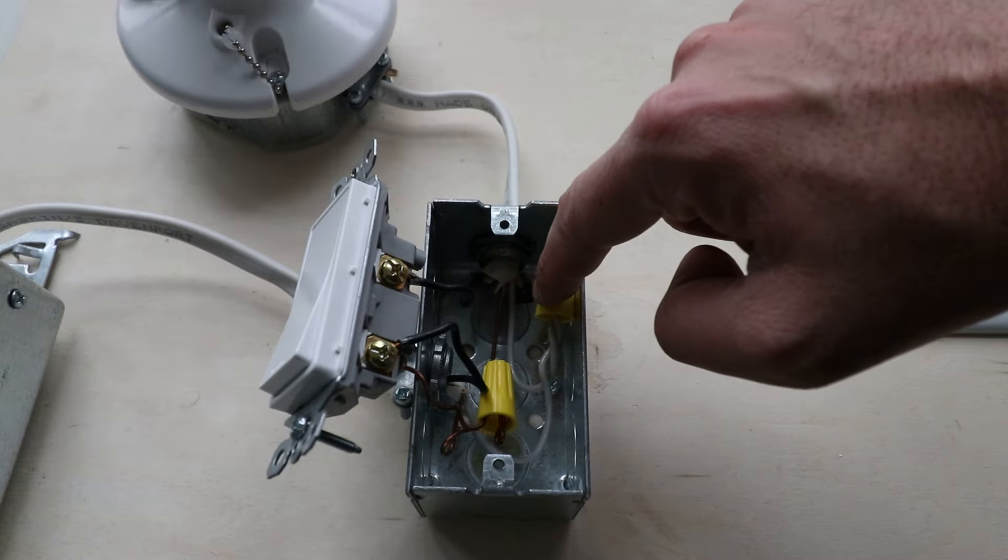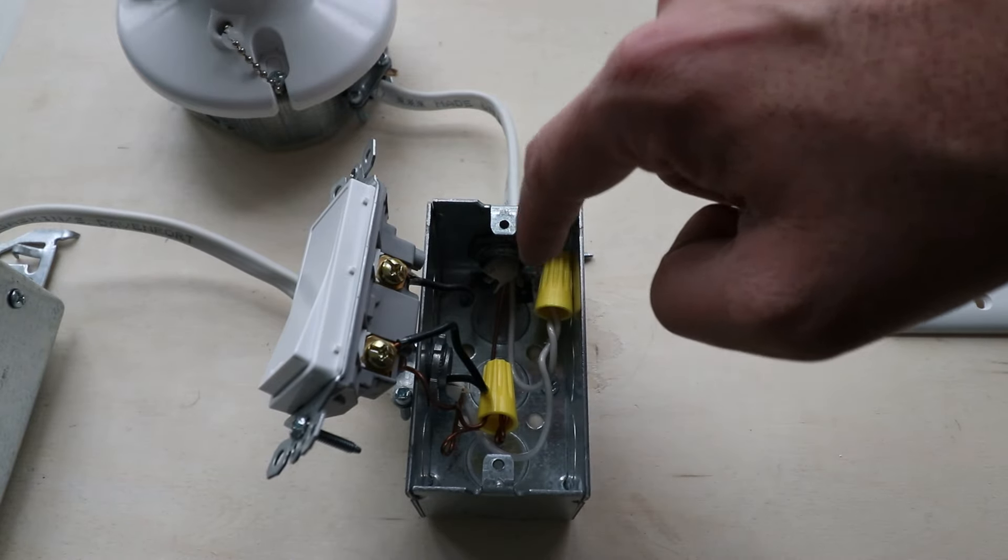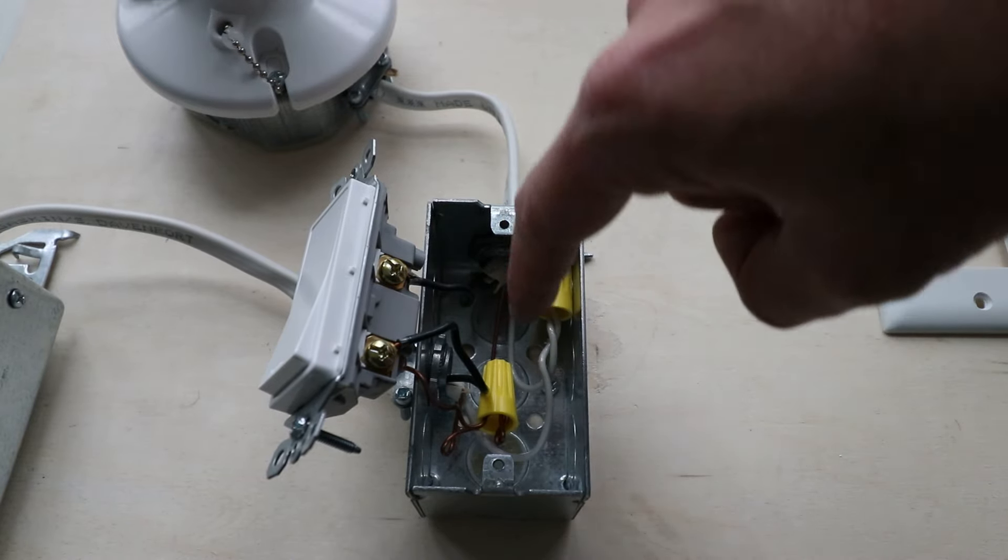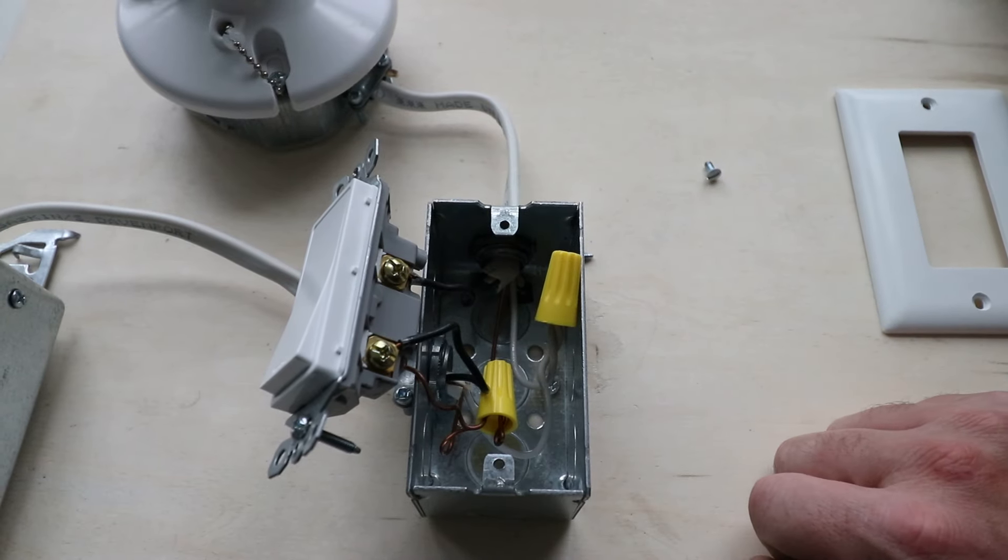However, the white wire is always a neutral wire, no matter where you are. So that is how you identify a neutral wire.